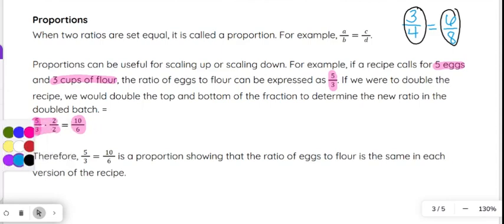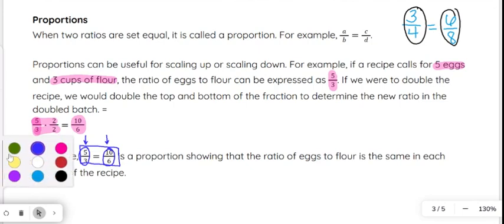So that would be 5 over 3 equals 10 over 6. And that would be a proportion that's showing the ratio of eggs to flour here in the single batch is the same equal to the ratio of eggs to flour in the doubled version. It's just 5 and 3 versus 10 and 6. But again, it's just that doubled version. So it is still equivalent. That is what a proportion is.